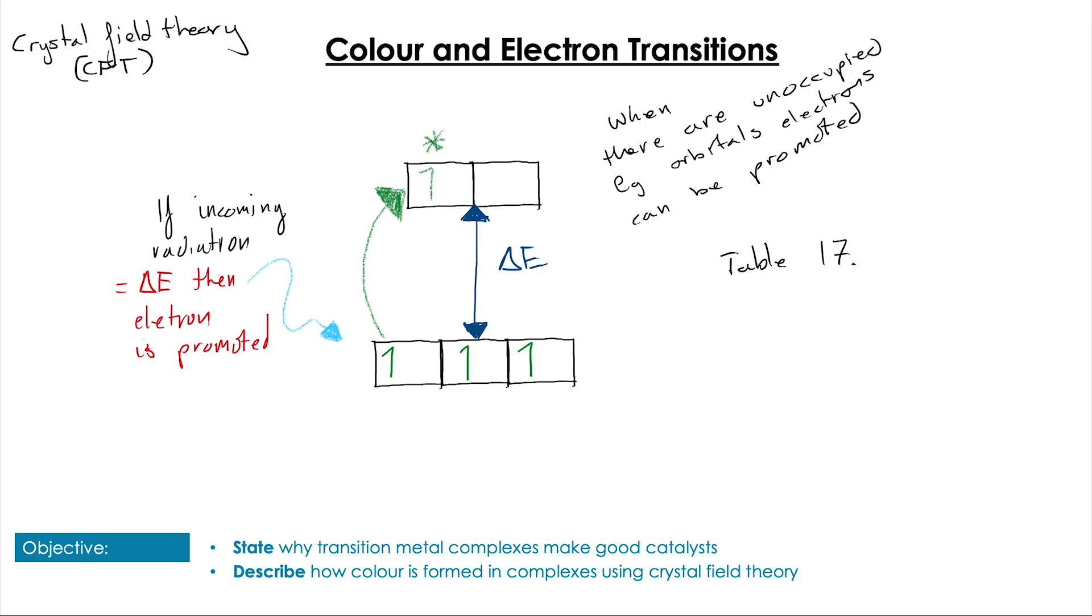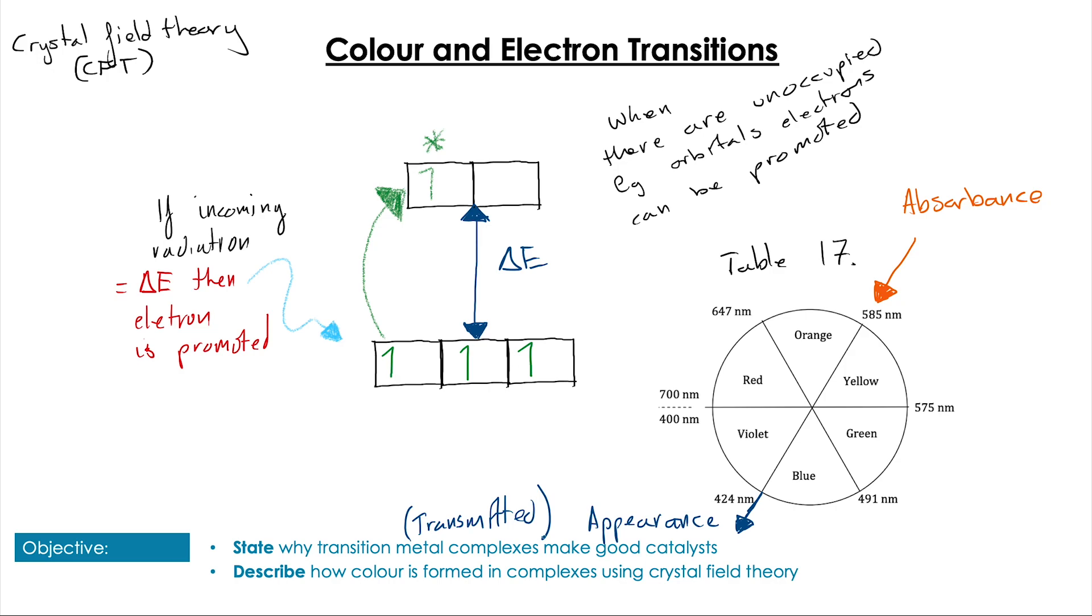This promotion can only happen if there is incoming radiation that hits the low energy electrons where the radiation's energy is exactly equal to that of delta E. If the radiation's energy equals delta E, then it will cause a promotion from the lower energy level to the higher energy level, causing the excited state of the complex ion. It's that absorbance that corresponds to the color of the complex.